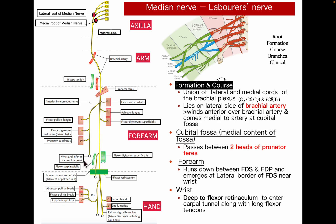The main median nerve passes deep to the flexor digitorum superficialis, traveling between it and the flexor digitorum profundus, and emerges at the lateral border of flexor digitorum superficialis near the wrist joint. In the forearm, it supplies the remaining superficial muscles: flexor carpi radialis, palmaris longus, and flexor digitorum superficialis.